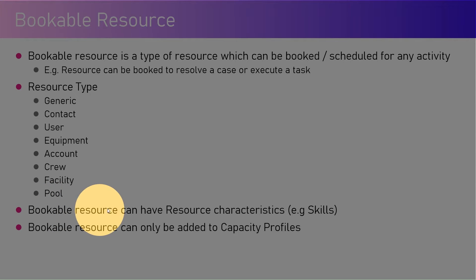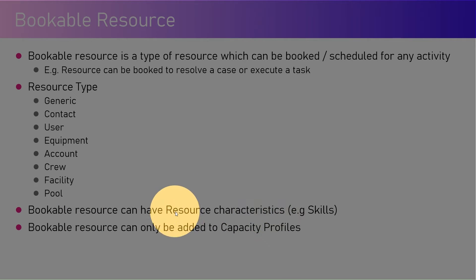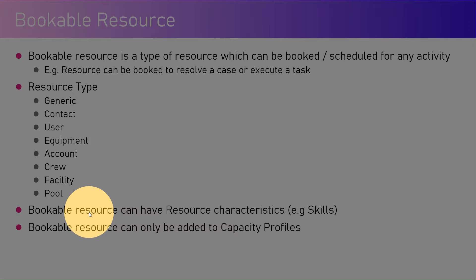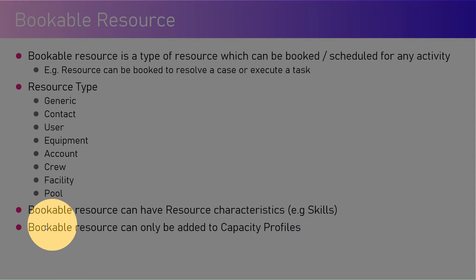A bookable resource can have resource characteristics — for example, a skill set. A bookable resource can only be added to a capacity profile. Every bookable resource used in Omnichannel will have resource characteristics, which are basically skills. For example, if Girish is a resource, he might be an expert in Power BI or Power Apps. If Girish is proficient in Power Virtual Agent, then the resource characteristic is Power Virtual Agent with a rating of 'proficient'.